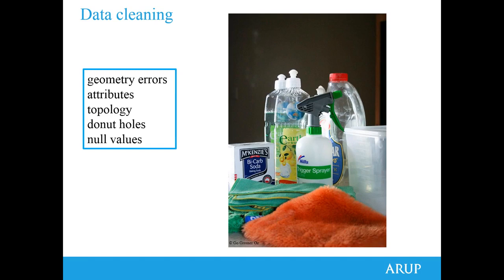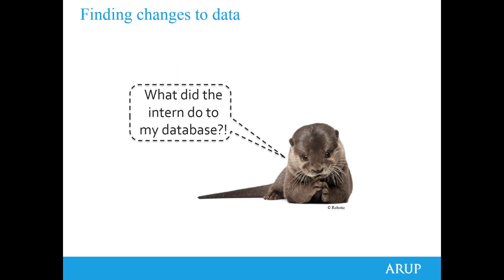As GIS folk, we have an important task of making sure that data is fit for purpose. Often we are the first instigators of data on a project — people come to us saying they need land parcels or roads for an area. We need to assess that data: Is it fit for purpose? There are often geometry errors, little loops or intersections that shouldn't be there, missing attributes, topology issues, donut holes, or null values. This doesn't just go for data from the internet — it also applies to data from external contractors, subconsultants, or colleagues who've collected it in the field.